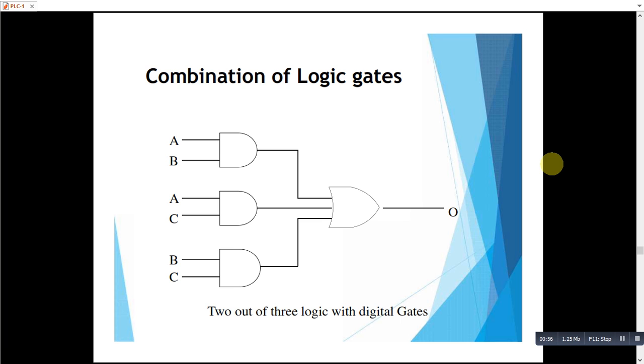So we have the 3 detectors A, B and C, and this is how we will implement it. There are 3 AND logics and then there will be an OR logic.